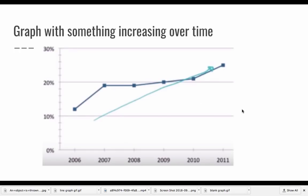This graph shows something increasing over time. You can see that it starts in 2006, down low or close to 10%. And as you move through the years, 2007 is a little higher, 2008 stays about the same. And by 2011, you are up higher.